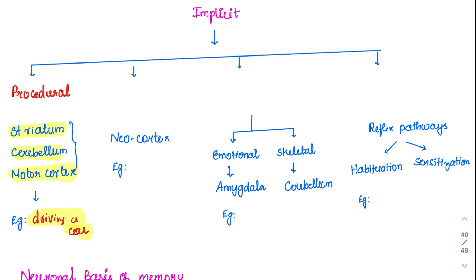Coming to the next memory, which is called priming, done with the help of the neocortex. I will give you beautiful examples. Try filling in the blanks: I give you 'apple, orange' and then 'Gr___'. Most of you would have responded with an answer.